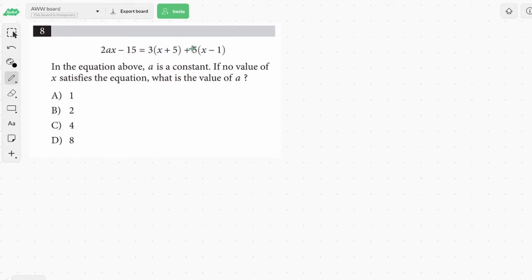So in this one, we have some equations. And it says in the equation above, a is a constant. If no value of x satisfies the equation, what is the value of a? So it says no value of x satisfies, meaning there is no solution. So I would start by just distributing these numbers here.